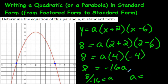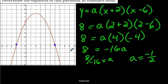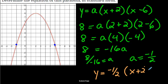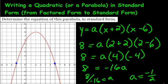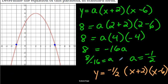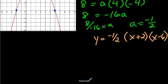So a = negative one-half. Our factored form equation is y = negative one-half times (x + 2)(x - 6). The negative sign means the parabola opens upside down, and the one-half means it opens wider than normal. Now remember, the whole purpose of this video is to go from factored form into standard form, so we still need to multiply this out.